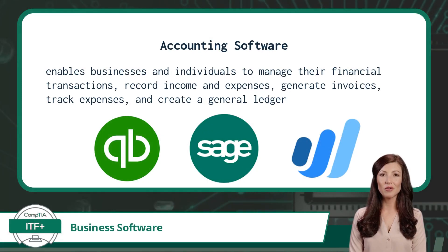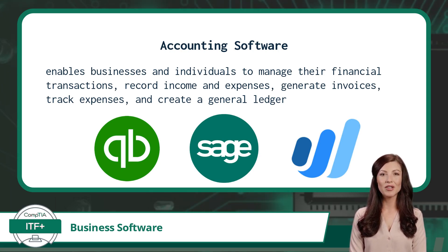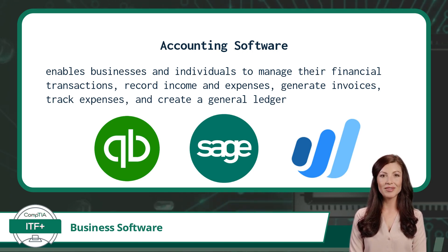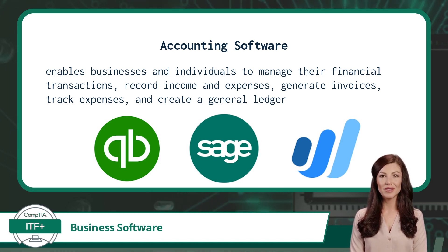The last business software type we will cover is accounting software. Accounting software enables businesses and individuals to manage their financial transactions, record income and expenses, generate invoices, track expenses, and create a general ledger. It automates various accounting processes, such as bookkeeping, payroll, and tax calculations, making it easier to track and analyze financial data. Accounting software helps businesses maintain accurate financial records, streamline financial operations, and ensure compliance with financial regulations and reporting requirements.